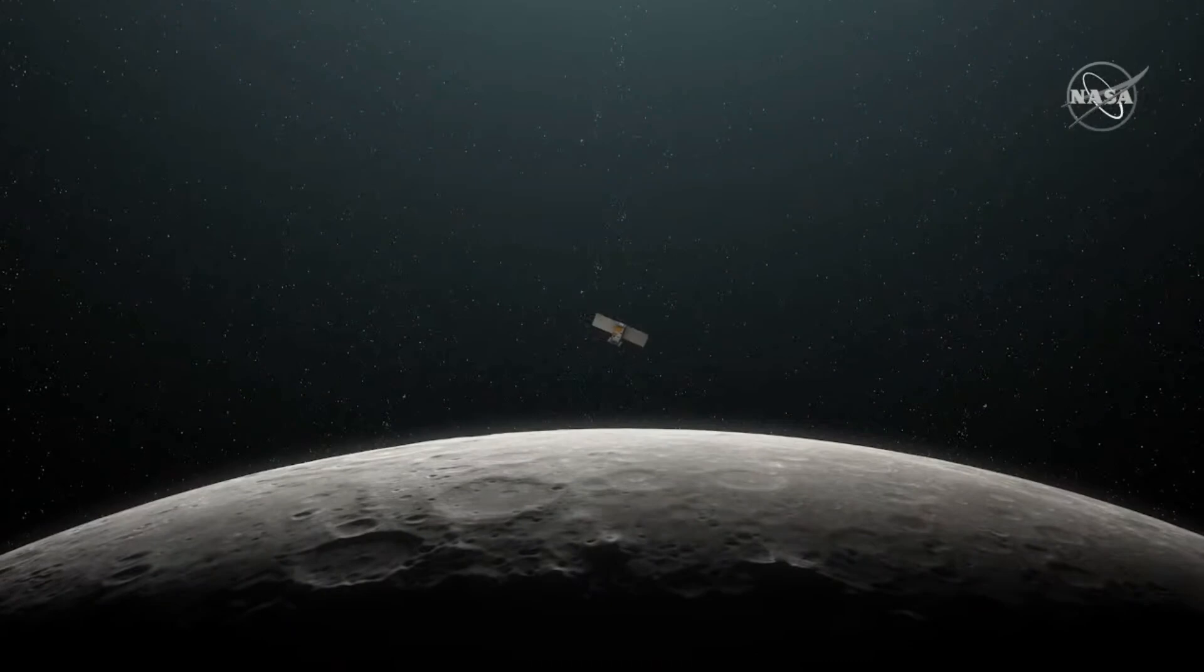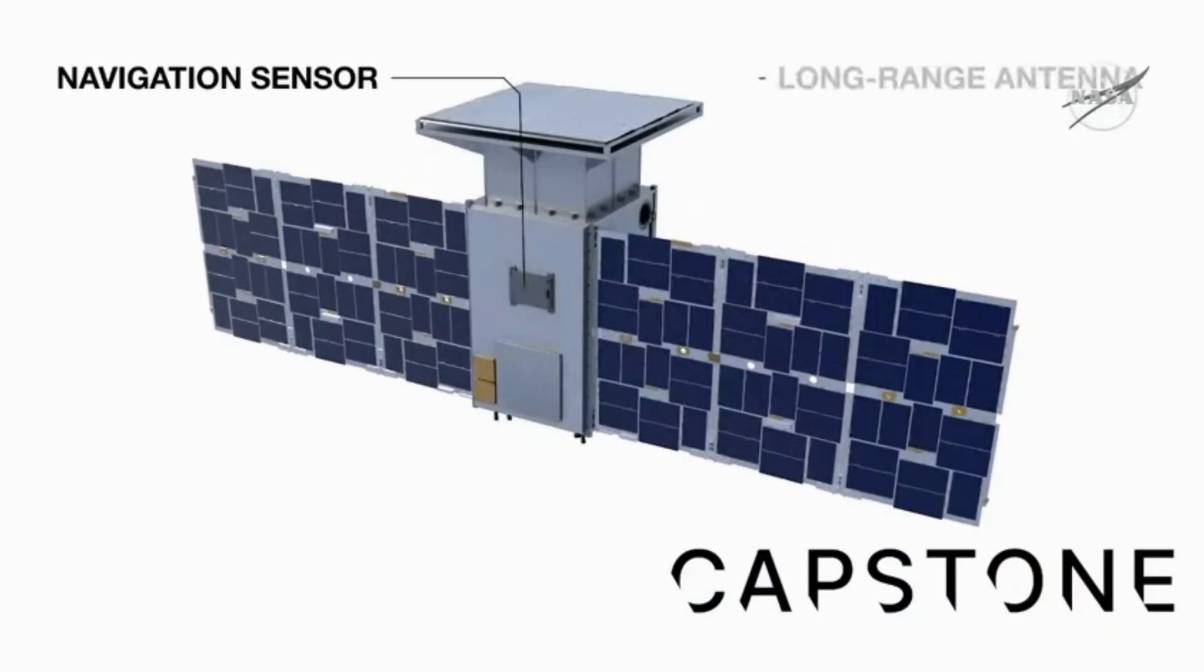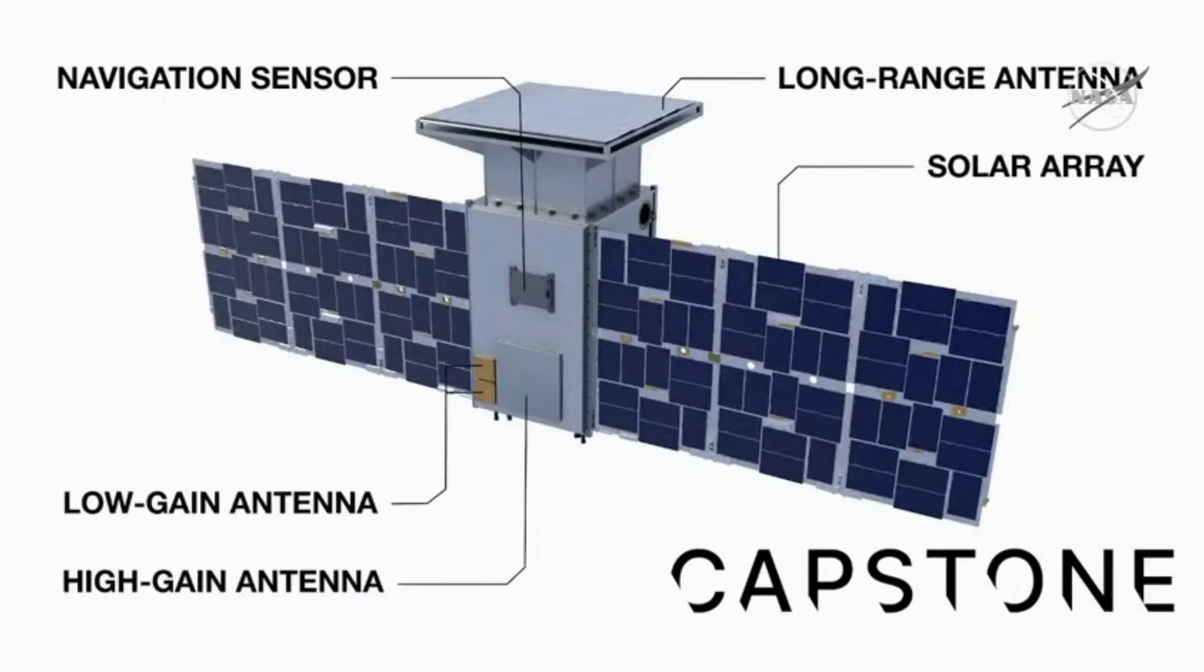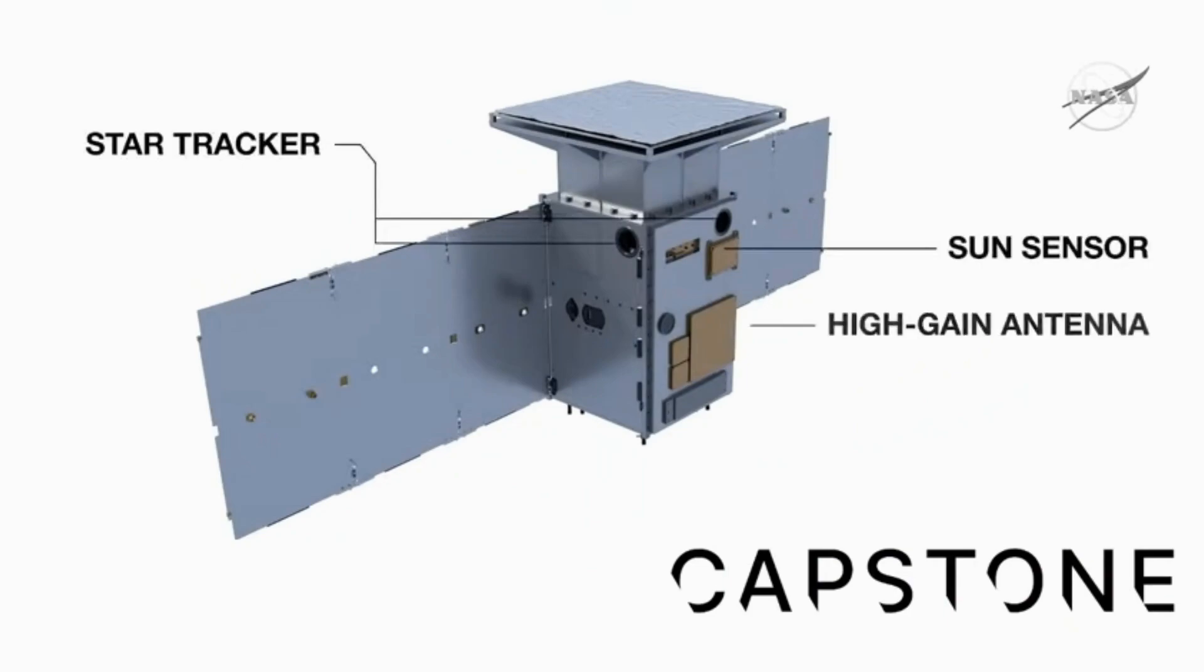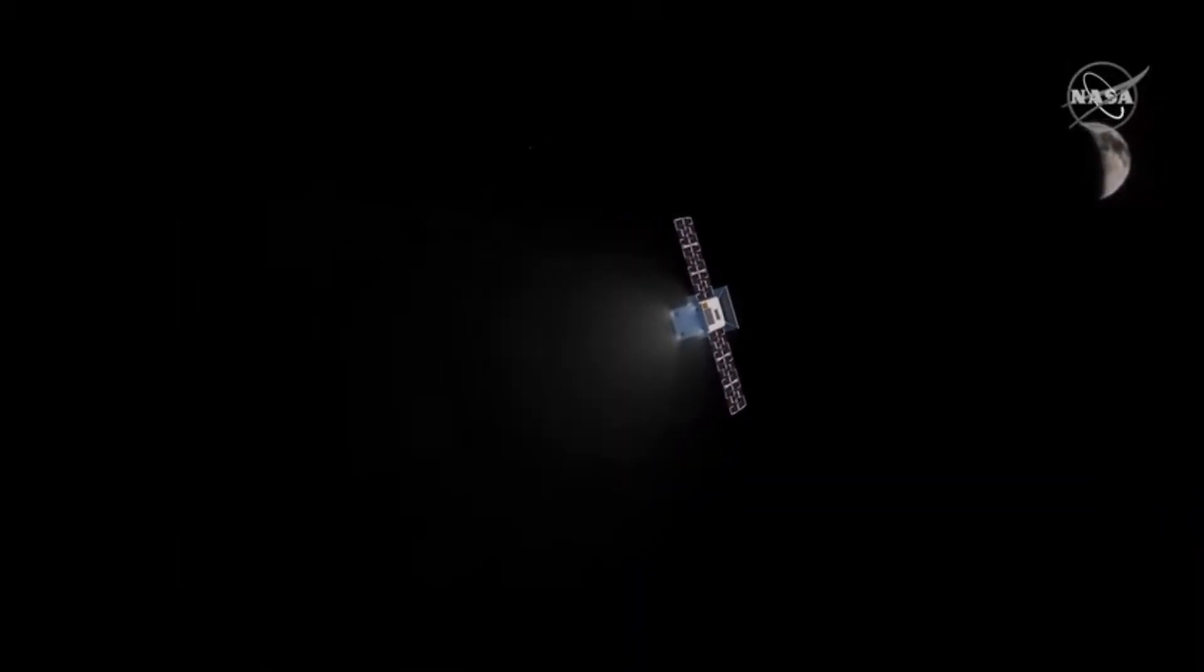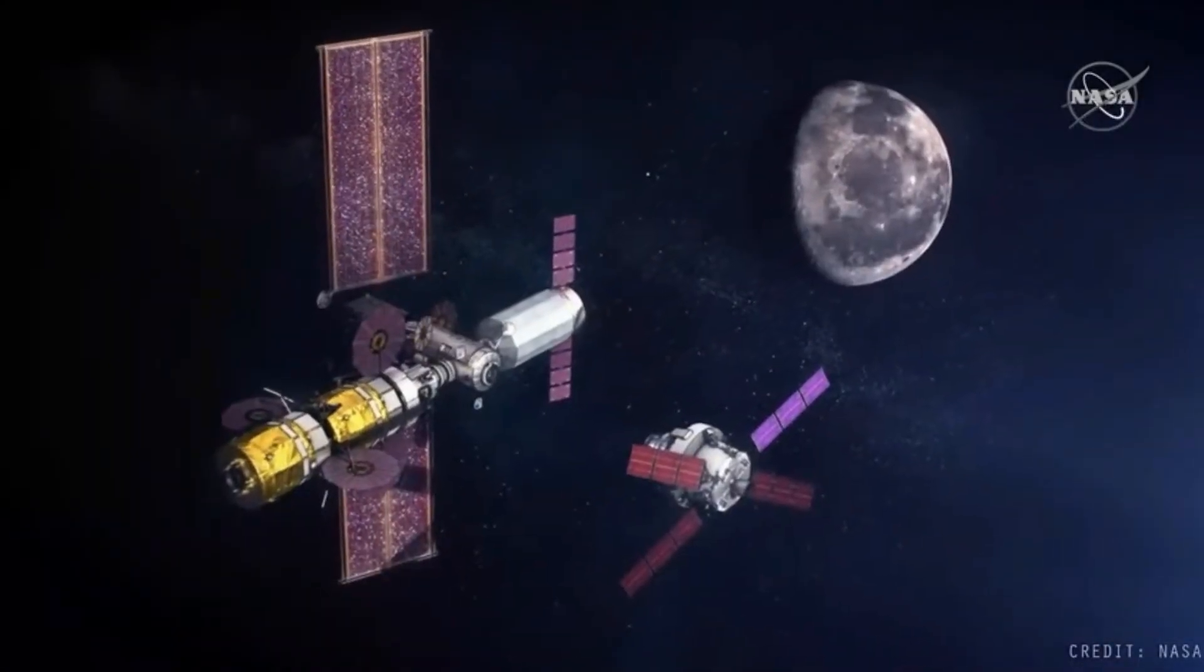The Apollo program didn't do this. They went straight to low lunar orbit. They basically brute-forced this. They didn't ride gently over these hills and valleys of the gravitational potential around the Moon and the Earth. They just drove through them with brute force using an absolutely monstrous rocket.